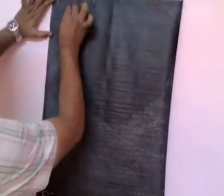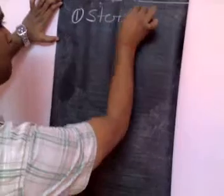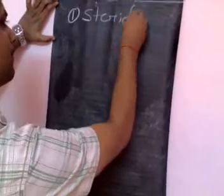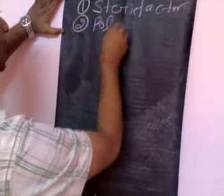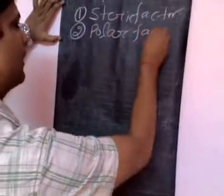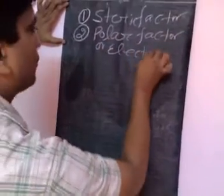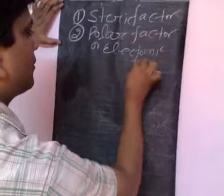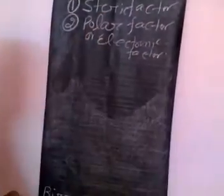Now I am going to discuss the factors on which the reactivity of aldehydes and ketones depend. There are two important factors: one is the steric factor, and the other is the polar factor, which is also known as the electronic factor. One by one we will discuss both the factors.